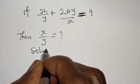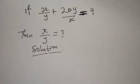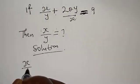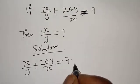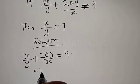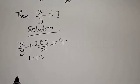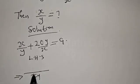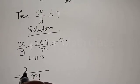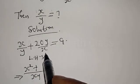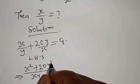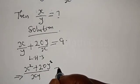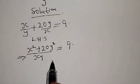Solution: we have x over y plus 20y over x equal to 9. From the left hand side, let's find the LCM. The LCM is xy. So we have x times x over xy, which remains x squared, plus y times 20y over xy, which gives 20y squared, equal to 9.